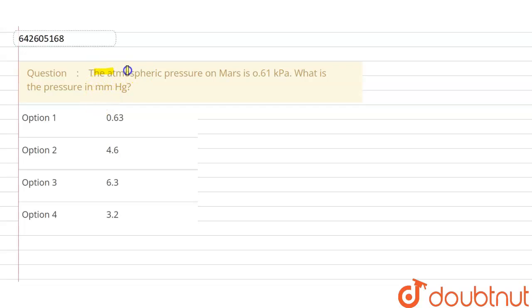Hello students, so the question is given as: the atmospheric pressure on Mars is given as 0.61 kilopascal. So what is the pressure in mm of Hg?